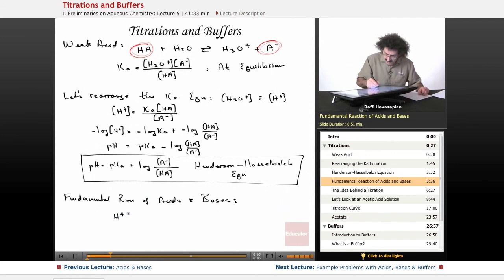Anytime you put an acid together with a base, essentially what you're doing is you're putting an H plus near an OH. Anytime an H plus and an OH minus are near each other, they're going to form water. This is the fundamental reaction. This will always happen. This is the idea behind a titration.